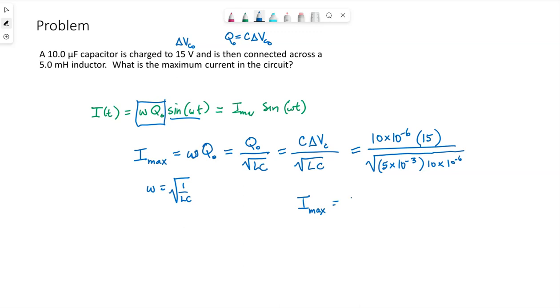Plugging these numbers in, I'm getting 0.67 amps. This is our current, the magnitude or peak value that the current will reach in this circuit.